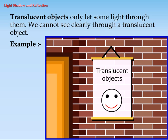Translucent objects only let some light pass through them. We cannot see clearly through a translucent object. Example: ground glass.